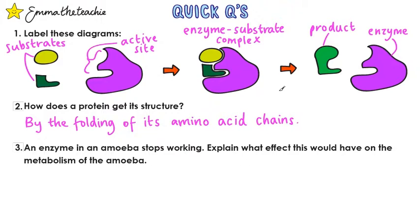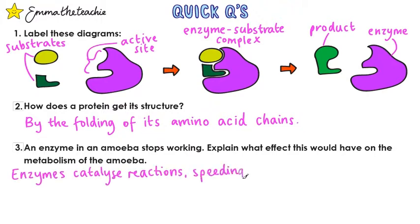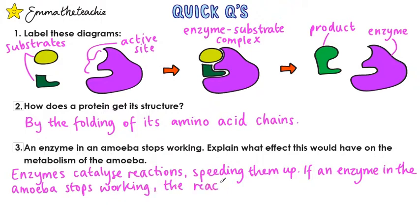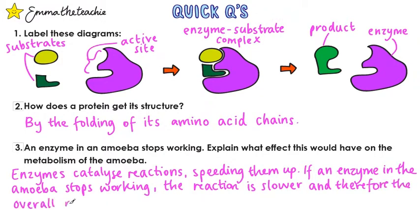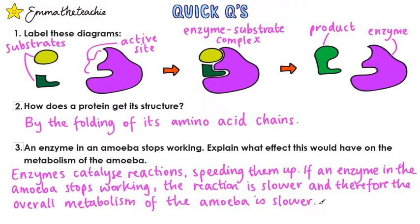Question three: an enzyme in an amoeba stops working — explain what effect this would have on the metabolism of the amoeba. Enzymes catalyze reactions, speeding them up. So if an enzyme in an amoeba stops working, the reaction will be slower, and therefore the overall metabolism of the amoeba will also be slower. This depends on remembering that metabolism is the sum of all of the chemical reactions in a cell or organism.